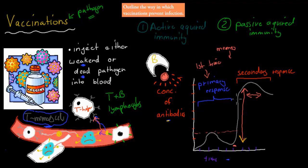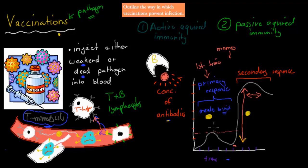With vaccinations, we're trying to artificially induce the primary response to make sure that in the future we go straight to the secondary response. For example, with the measles virus, we inject a dead measles virus into children and this makes the primary response happen. But the child won't be infected or sick because it's a dead virus. If the live measles virus comes back, instead of the primary response, we'll have the secondary response — the memory cells will detect it and make sure the virus gets killed.